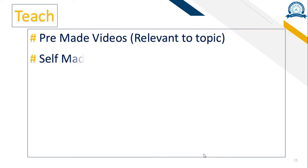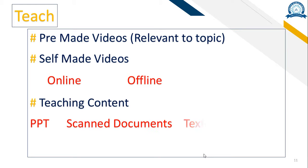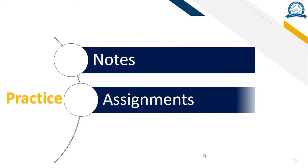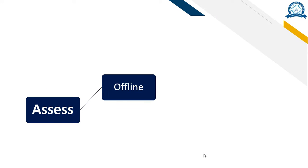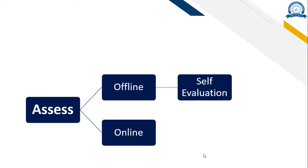Now, we need to choose which way we want our content for teaching. We can choose any one, or a combination of few or all. We also need to keep students' practice in mind. For that, we can use any one of those specified. And finally, to assess students' progress, we can use both online and offline ways.